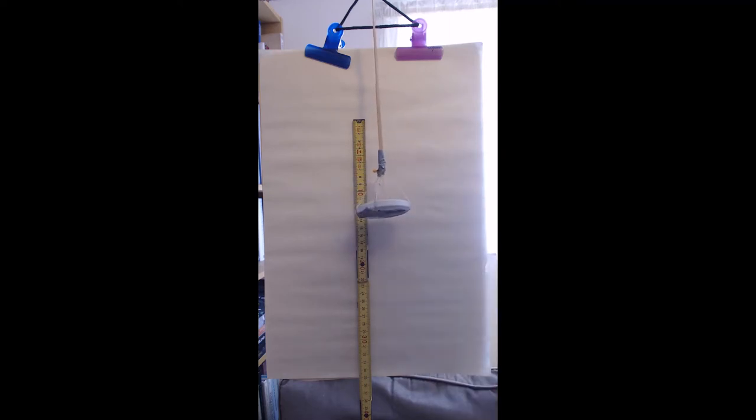Behind I've propped up a ruler in centimeters. We're going to note the position when there's no weight placed in this tin lid, and then we're going to gradually add weights and see how the extension of our elastic band progresses.